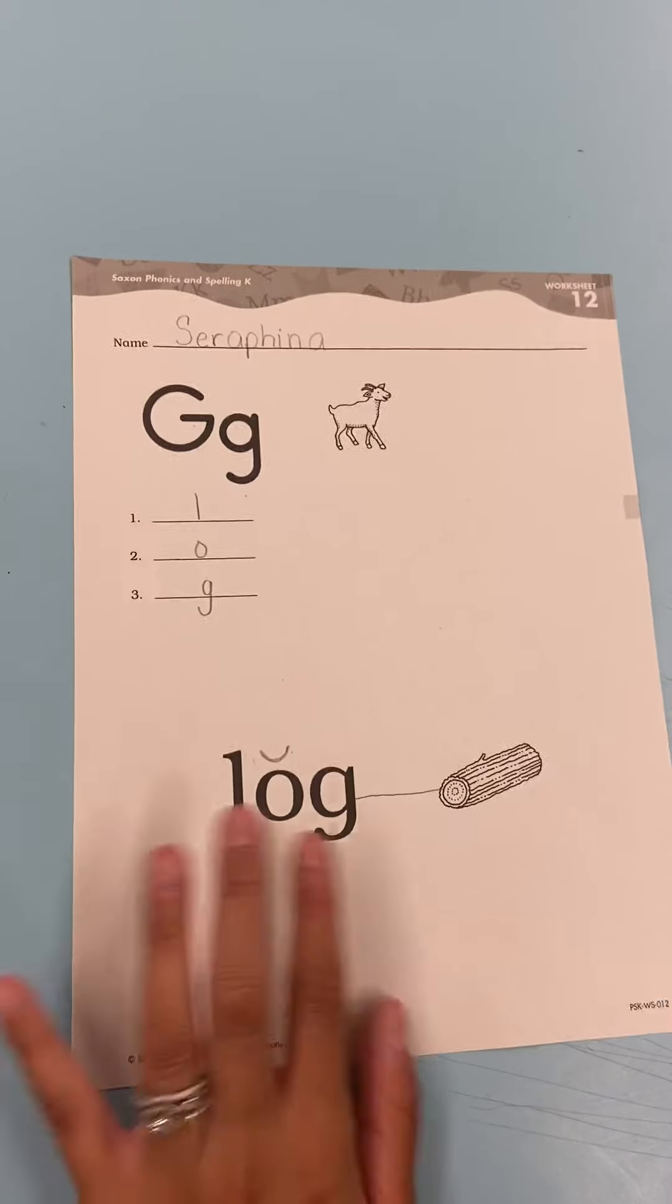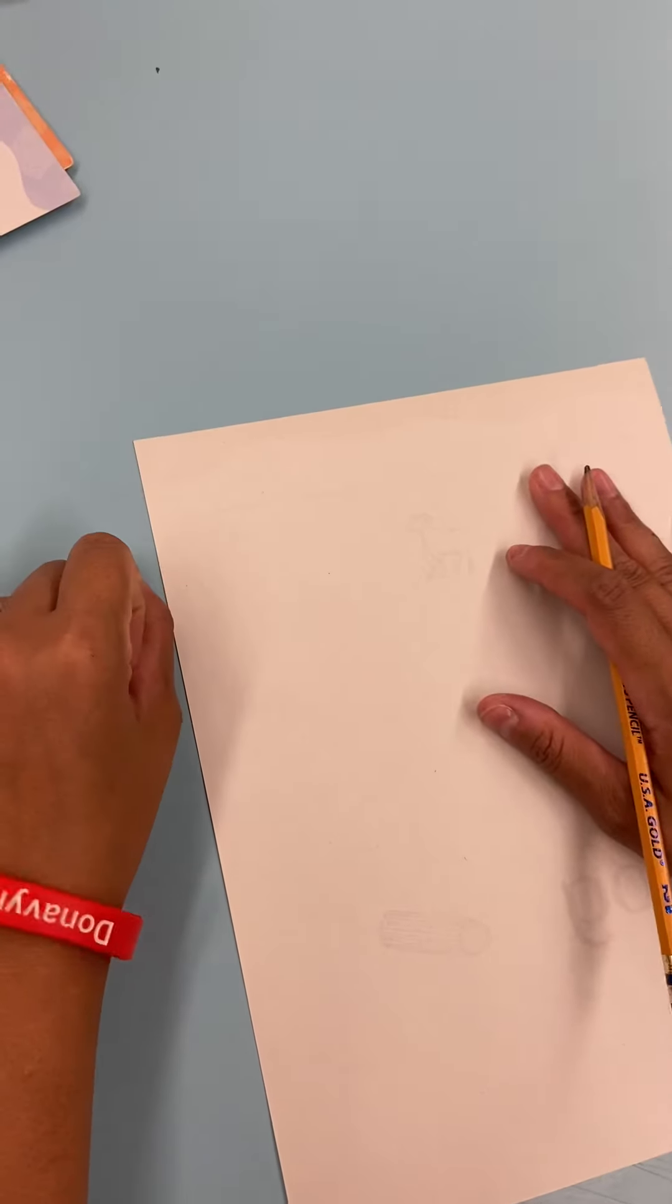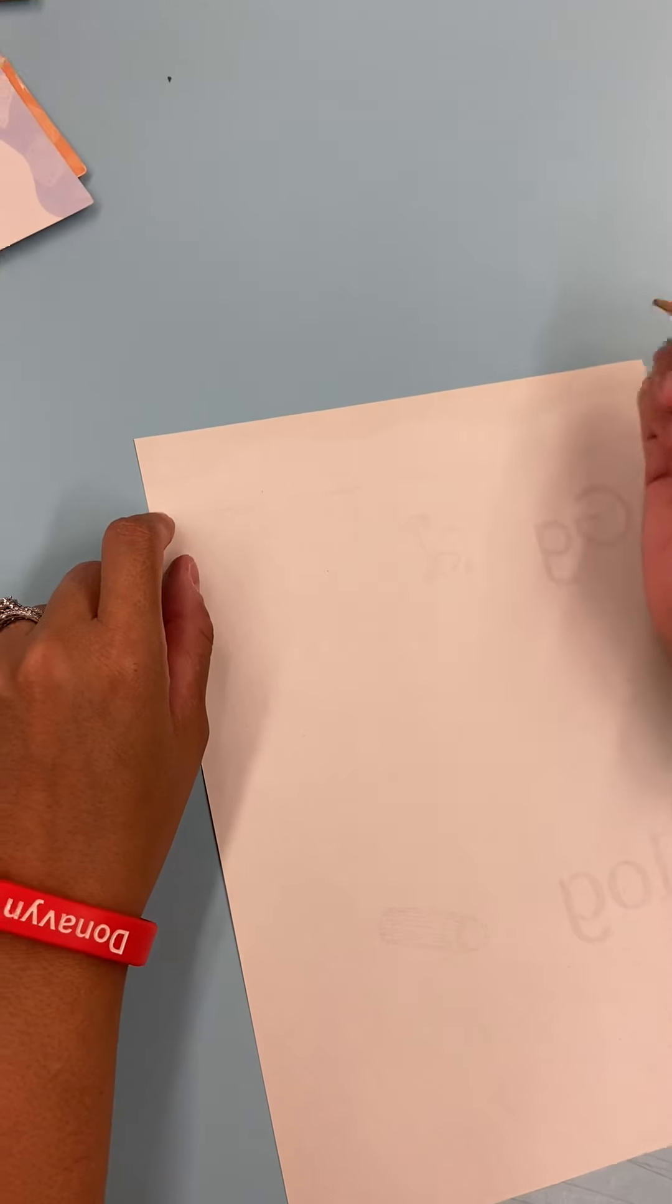All right. Flip your paper over. Okay. You're going to write your letters. We're going to review our letters that we already know.